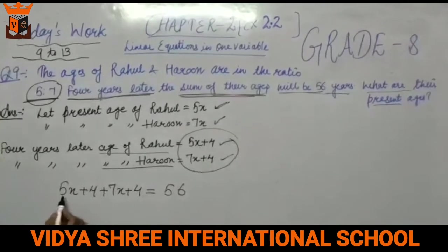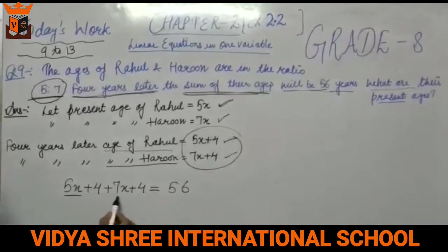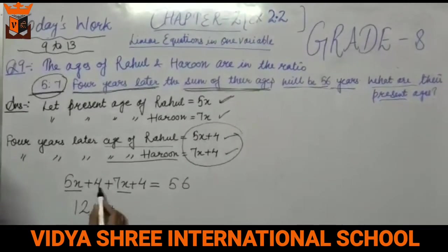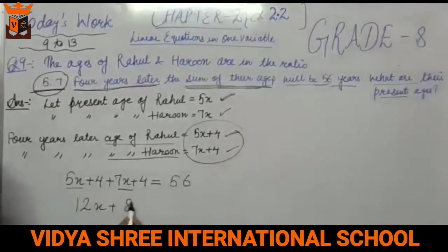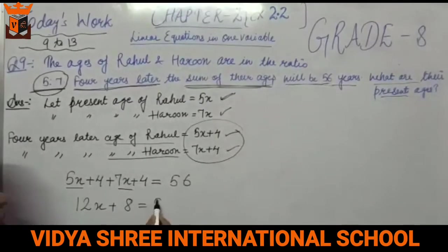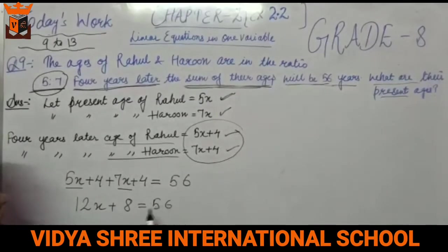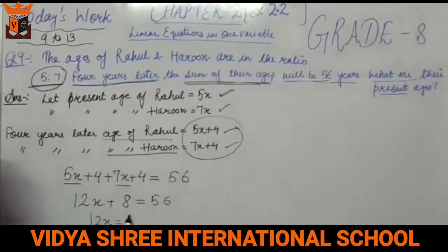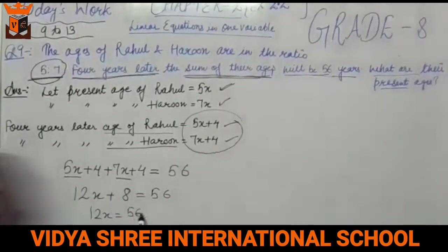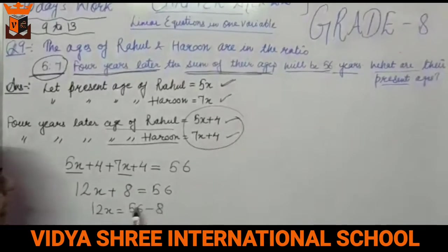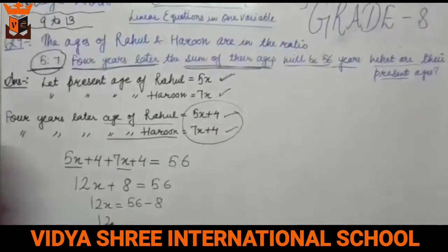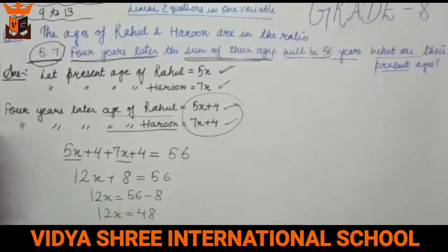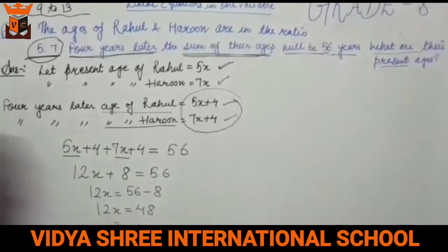So we add: 5x plus 4 and 7x plus 4 equals 56. Adding the x terms: 5x plus 7x gives 12x. And 4 plus 4 gives 8. So 12x plus 8 equals 56, which means 12x is equal to 56 minus 8, so 12x equals 48.